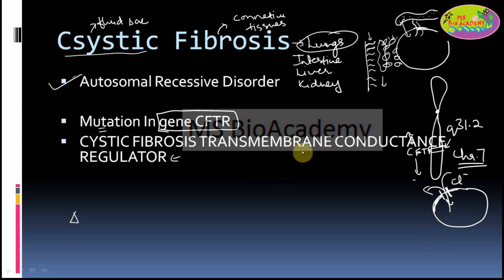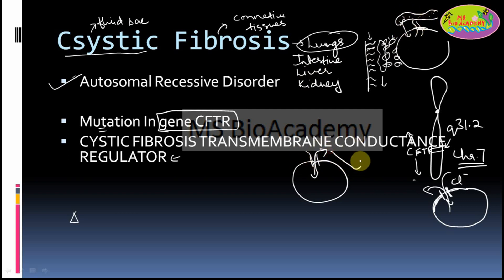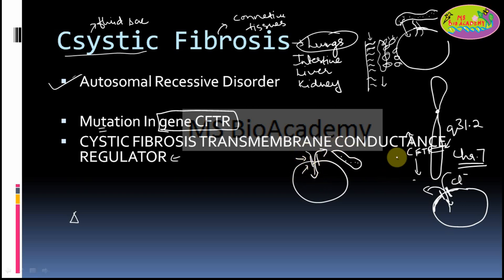The cell needs this channel so that chloride ions can move in and out. The secretions from epithelial cells form mucus, which is normally thin because it has more water content. But if a mutation happens in the CFTR gene on chromosome 7, it may lead to wrong formation of the CFTR protein — meaning its function is not proper — or the CFTR protein may not form at all.